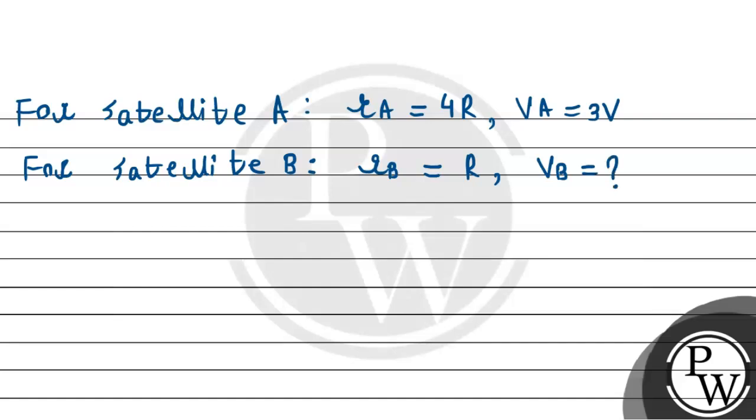we have R_B equals R and we need to calculate V_B. For both of them, we can write down the formula. V_A equals square root of GM divided by R_A. Similarly, V_B equals square root of GM divided by R_B.